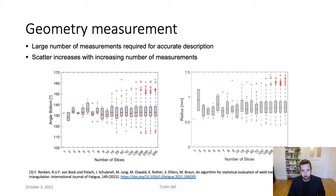In order to assess weld geometries, a particular task must be fulfilled first: one requires a certain measuring density to obtain statistically verified results. This is what we did in this study, where we chose small-scale butt welded joints and increased the number of slices until we found a constant mean value. With a small number of slices the variation is quite high, but once you reach a certain level, you find almost constant mode values for parameters like flank angle and weld radii.